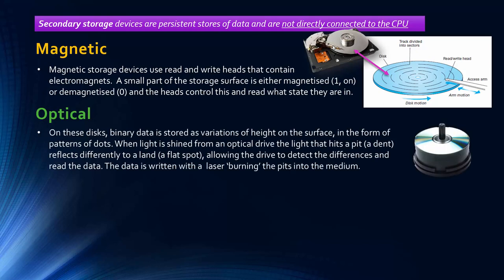The second technology is optical storage — CDs, DVDs, etc. On these disks, the binary data is stored as variations of height. Instead of being magnetized or demagnetized, these are actual physical indents. When we talk about burning a disk, it's causing these indents. When light is shone from an optical drive, the light that hits one of these pits reflects differently to a land, which is just the flat bits. The drive can detect the differences and read the data. The data is written with a laser burning the pits into the storage medium. Light shone on a flat land reflects straight back, indicating a 1, whereas light hitting a dent reflects out differently and doesn't return the same way, indicating a pit.